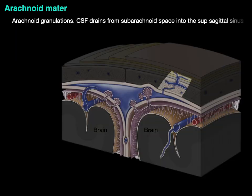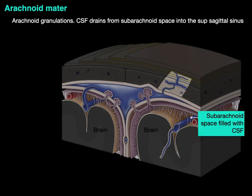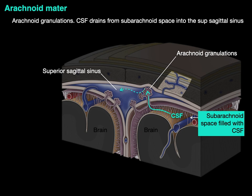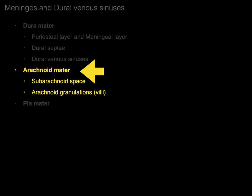The arachnoid granulations are where the CSF drains from the subarachnoid space into the superior sagittal sinus. The CSF flows from the subarachnoid space into these arachnoid granulations, which then filter the CSF back into the superior sagittal sinus — and that's how we get CSF back into the circulatory system.